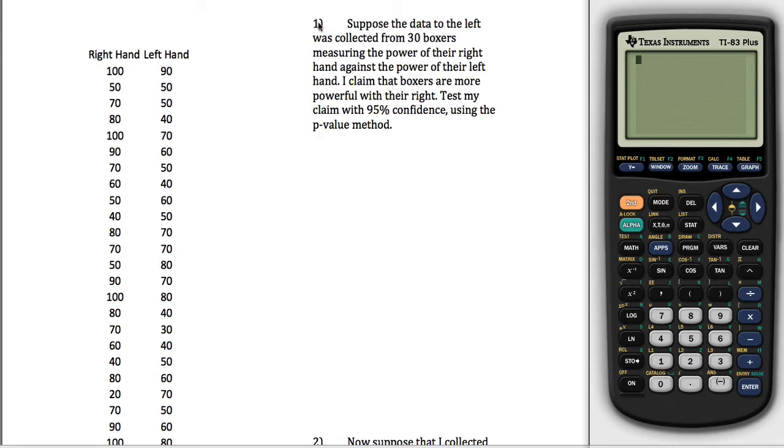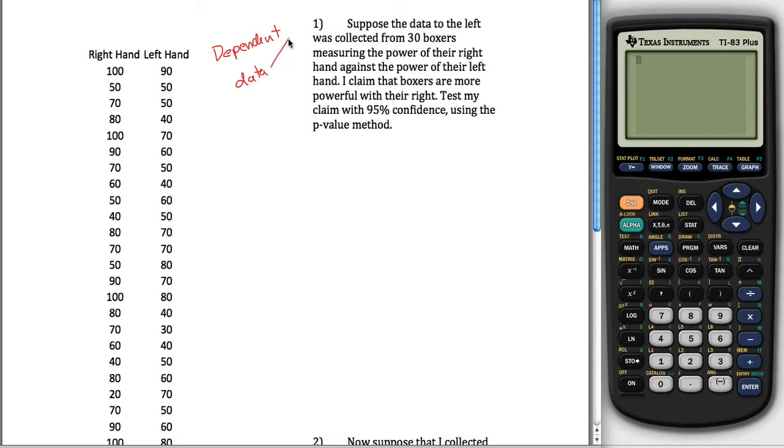The key thing about this first one is that we have dependent data. I'll talk a little bit about what that means, and then I'll talk about what independent data means, which will be our next example down at number two, which will be on a different video.